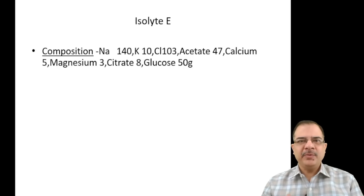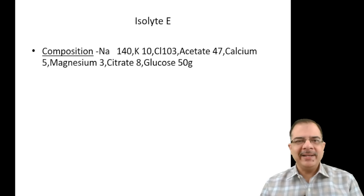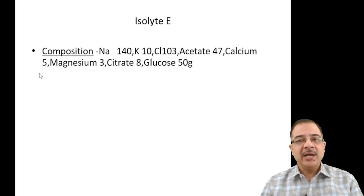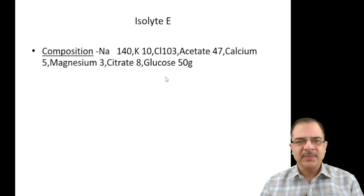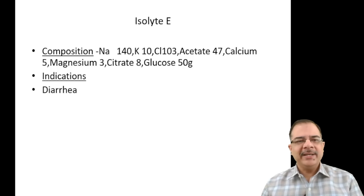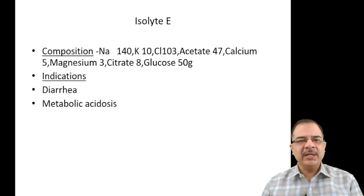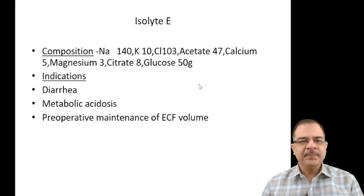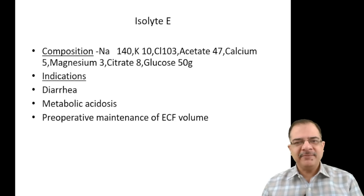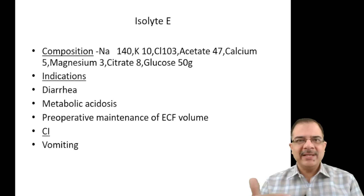Isolyte E — 'E' stands for extracellular fluid maintenance. Composition: sodium 140, potassium 10, chloride 103, acetate 47 (a source of bicarbonate), plus calcium, magnesium — it is the only IV fluid containing magnesium — and glucose 50 grams per liter. Indications include diarrhea, metabolic acidosis (acetate as a bicarbonate source), and pre-operative maintenance of ECF volume. Contraindication is vomiting, as it aggravates alkalosis.